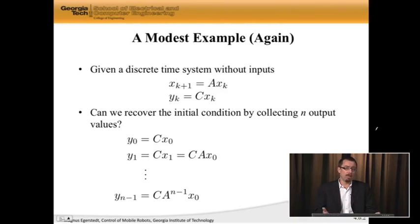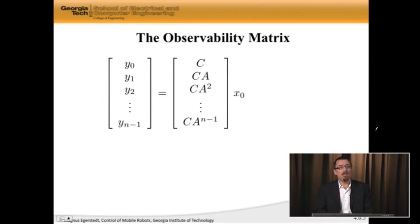So at time n minus 1, the output is ca to the power n minus 1 times x naught. So now I've gathered these little n different measurements or y's. And the relationship that we have is this.